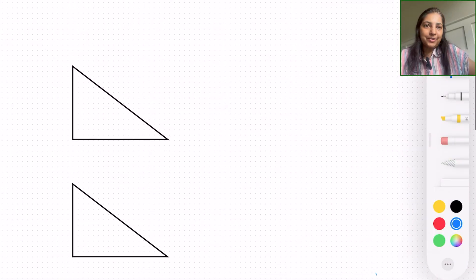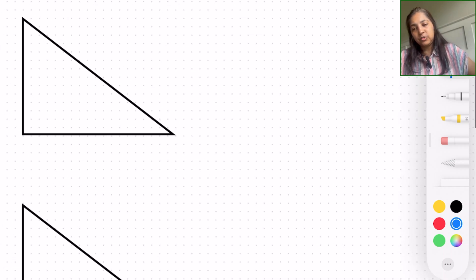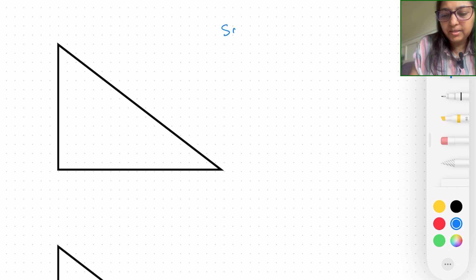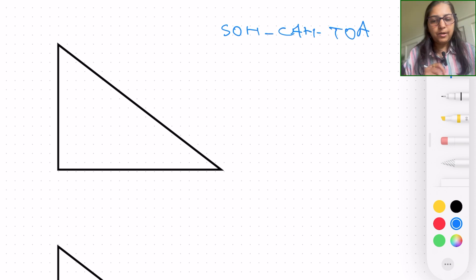On trigonometry, you're going to learn more about the SOHCAHTOA functions or ratios in today's video. So what we are trying to understand is what is this SOHCAHTOA. Basically, what this abbreviation means is that we are trying to measure the angles with reference to trigonometry.